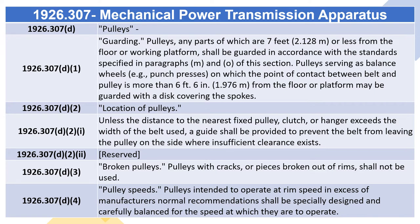Pulleys serving as balance wheels on which the point of contact between belt and pulley is more than six feet six inches (1.976 m) from the floor or platform may be guarded with a disc covering the spokes. 1926.307(d)(2)(i): Unless the distance to the nearest fixed pulley, clutch, or hanger exceeds the width of the belt used, a guide shall be provided to prevent the belt from leaving the pulley on the side where insufficient clearance exists. 1926.307(d)(3): Pulleys with cracks or pieces broken out of rims shall not be used. 1926.307(d)(4): Pulleys intended to operate at rim speed in excess of manufacturers' normal recommendations shall be specially designed and carefully balanced.